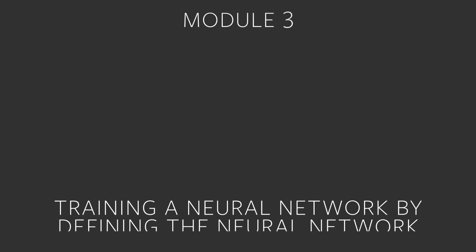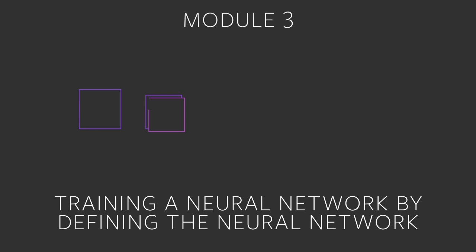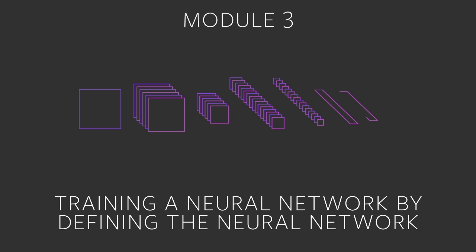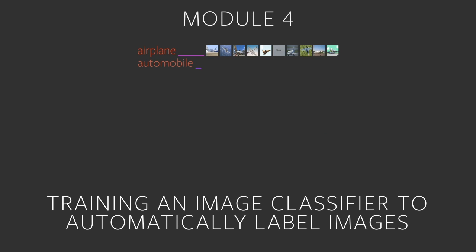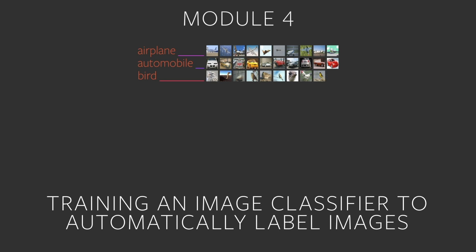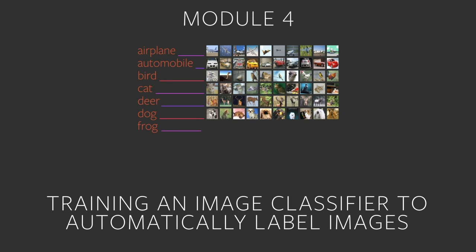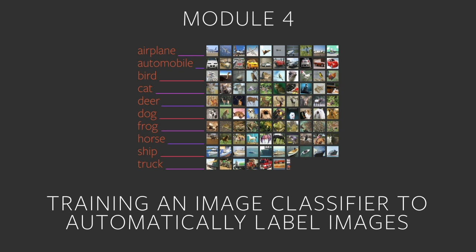In the third module, you'll follow a typical procedure for training a neural network by defining the neural network, computing the loss, and propagating gradients back into the network's parameters. Finally, you'll get to put what you learned in the first three modules into a real-life example, training an image classifier to automatically label images.